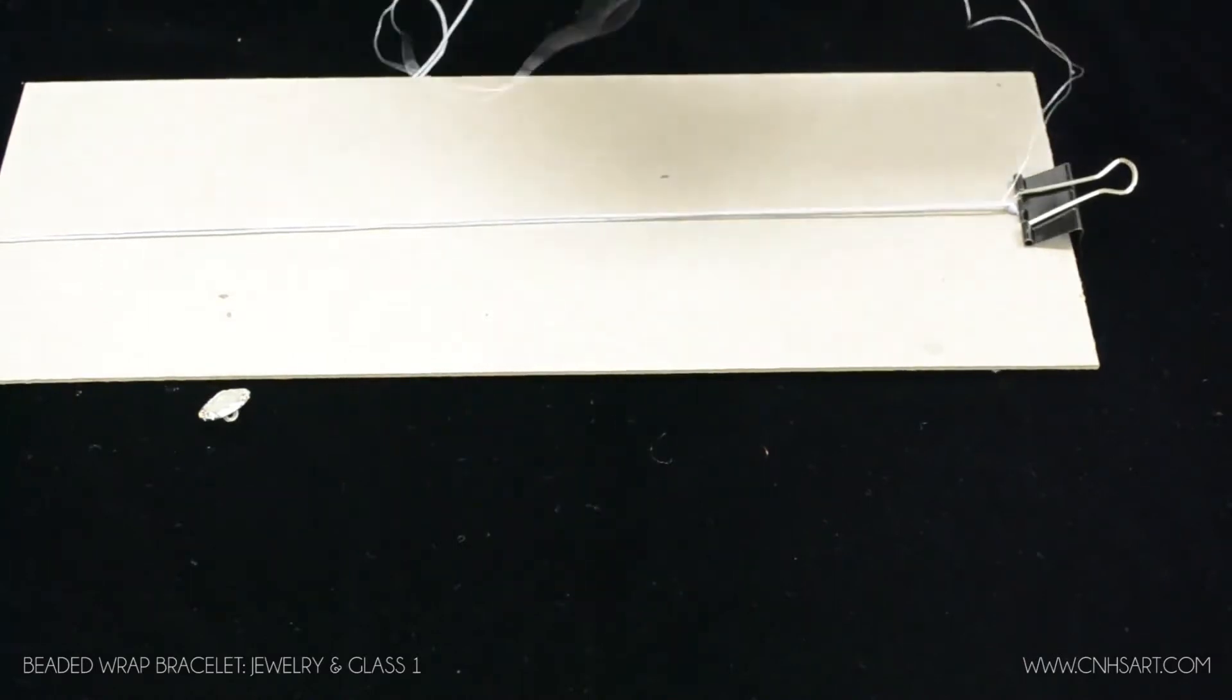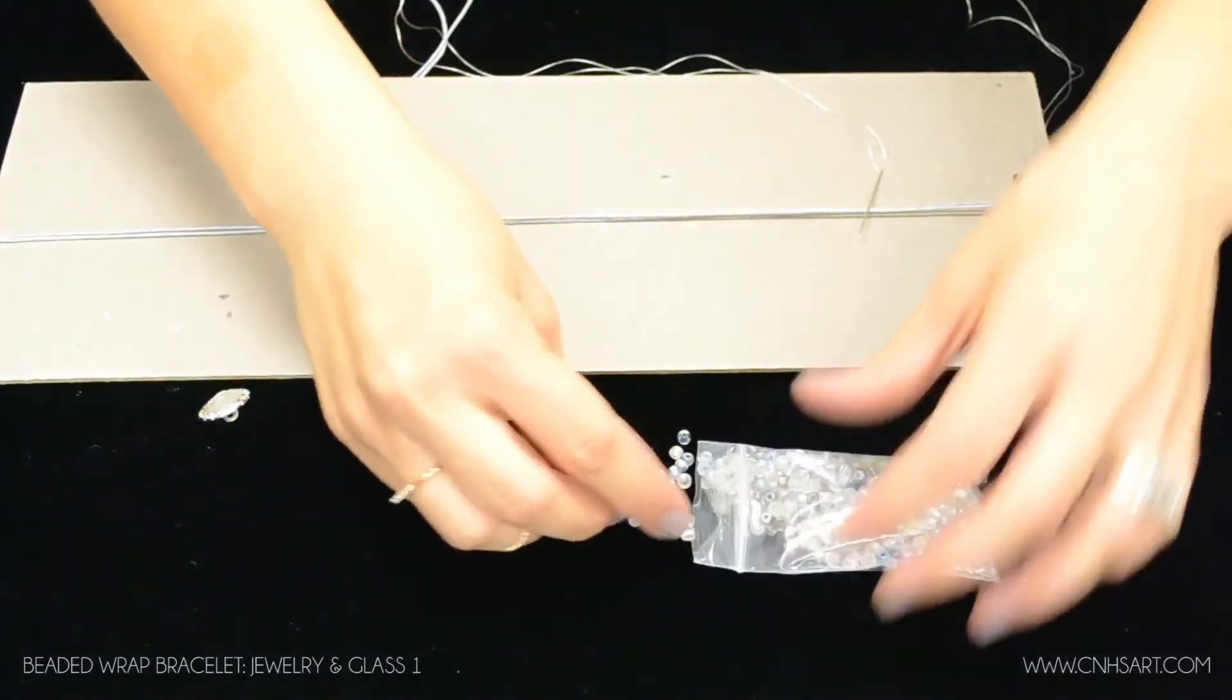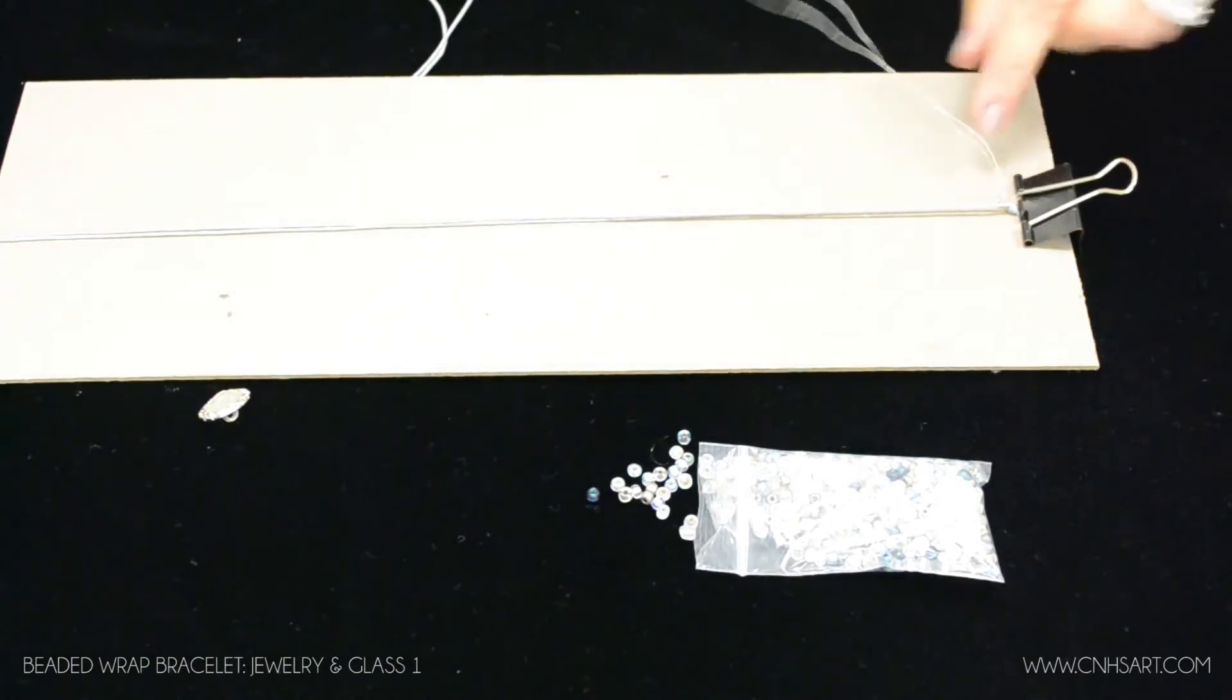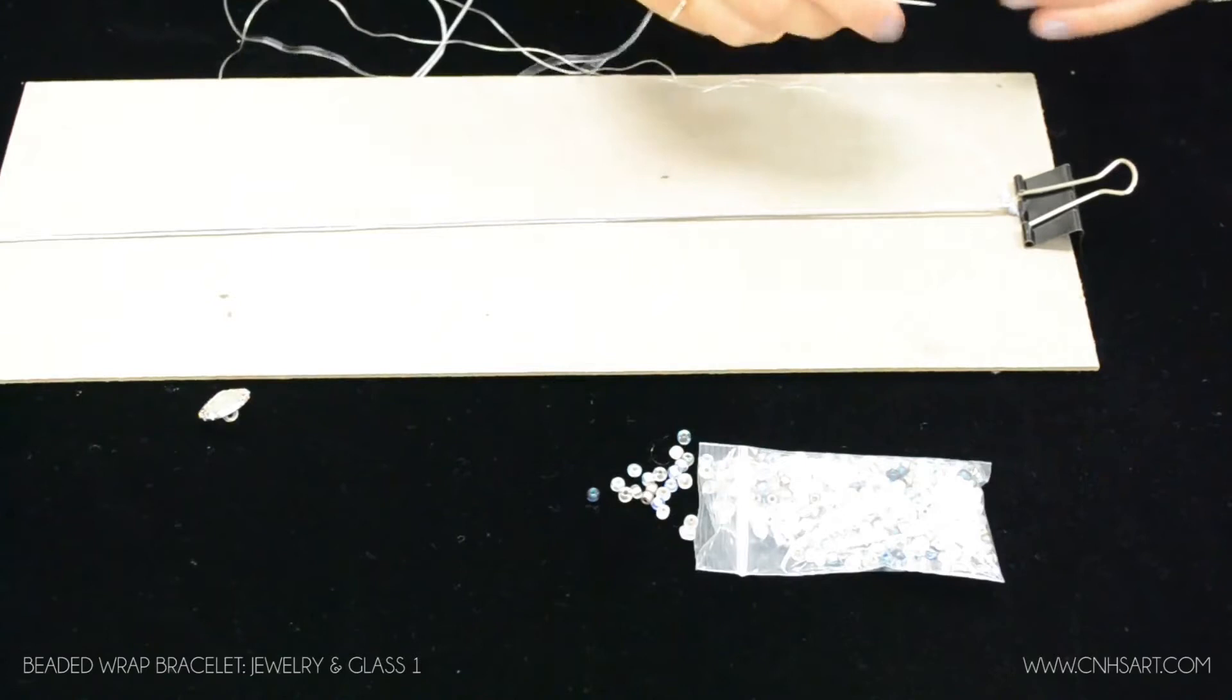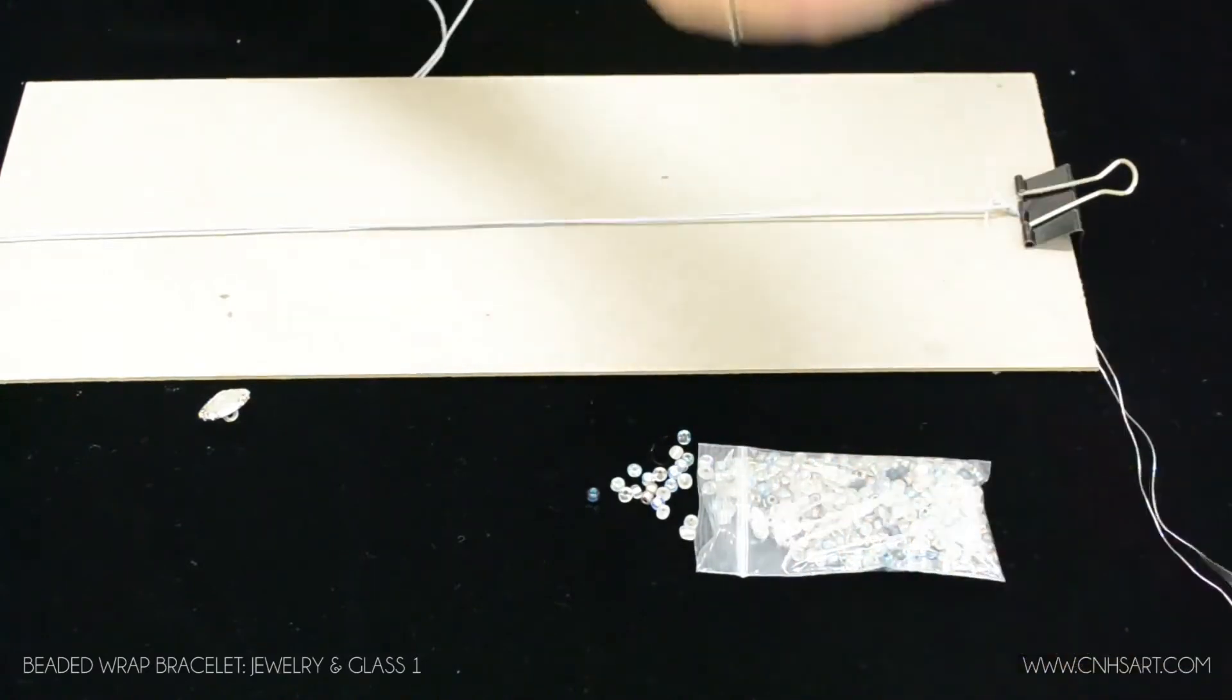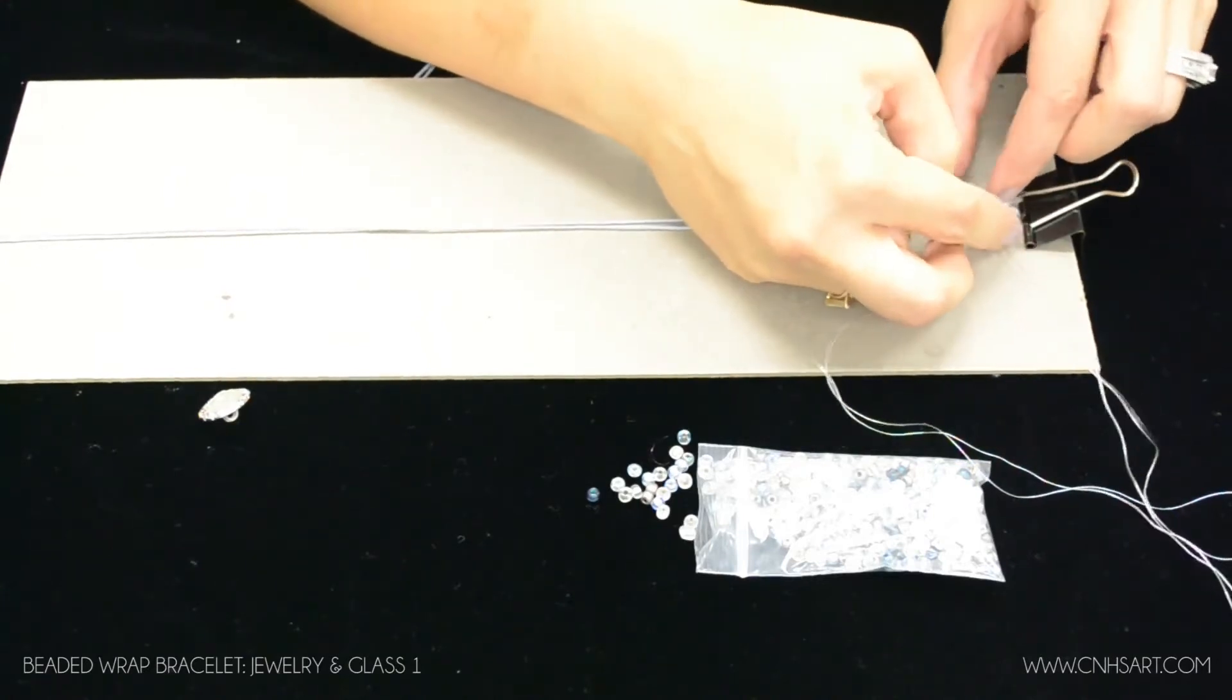And so this is a very simple weaving process. You're going to take your rocale beads and what you're going to do is add one on and I'm starting from the left side or from your view the top cord here. I slid the bead on and now I'm going to go under the right side and then I'm going to go back around and through that same bead and under the left cord again.